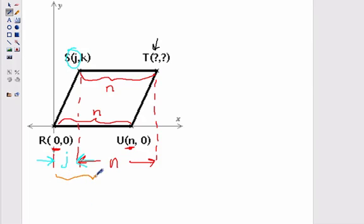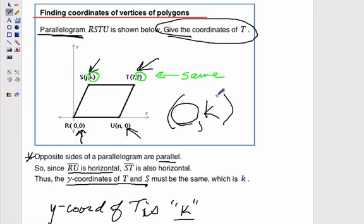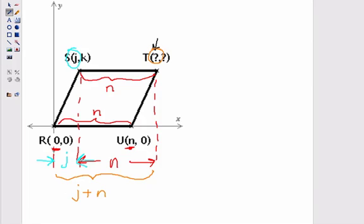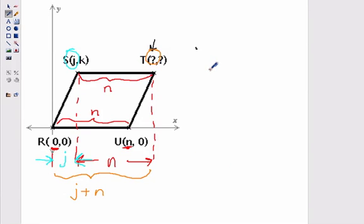So what can we conclude from that? The entire x-distance to T is going to be j plus n. So that means our x-coordinate is going to be j plus n. And we know from our previous screen the y-coordinate is k. So our final answer is j plus n, comma k.